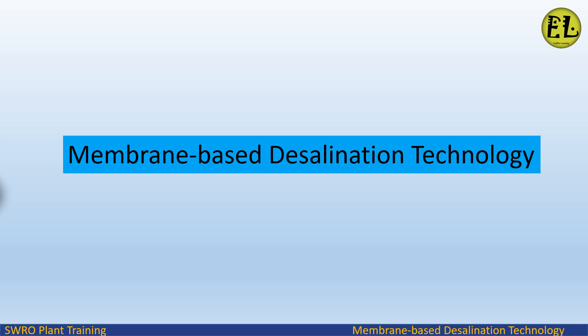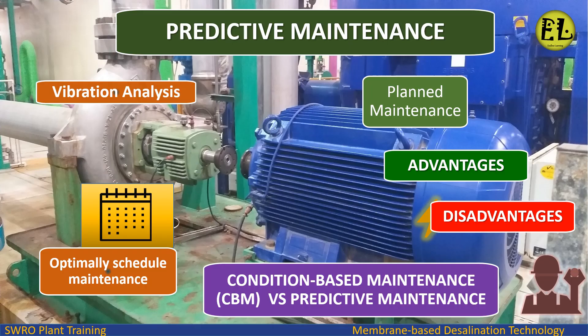Welcome to Endless Learning Training Series: Membrane-Based Desalination Technology. In this presentation we will study about predictive maintenance — for predicting equipment failures, identifying maintenance needs, foreseeing issues and optimally scheduling maintenance — its advantages and disadvantages, condition-based maintenance (CBM) versus predictive maintenance.